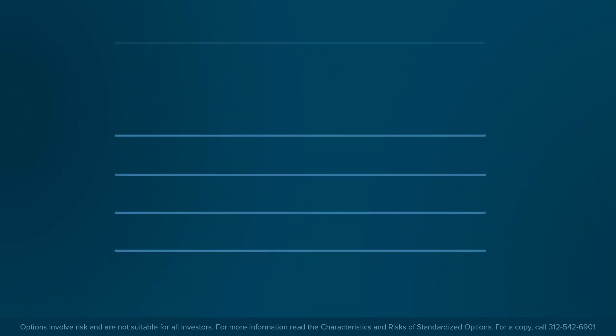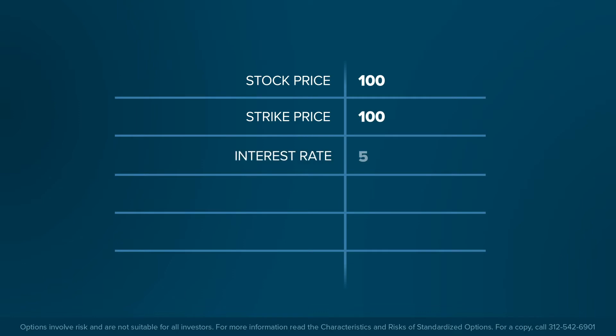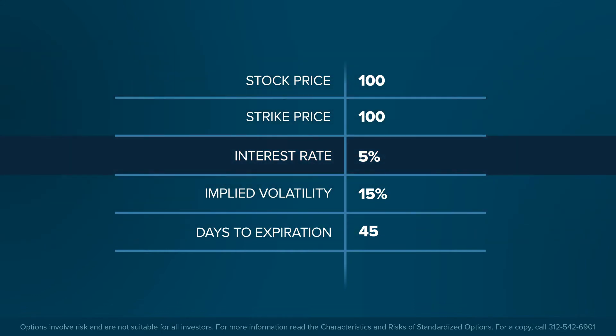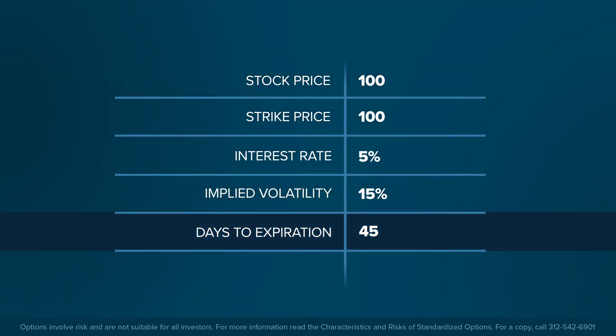Option premiums and the subsequent changes in option values can be predicted through a pricing model such as Black-Scholes. We will simplify things by taking you through the basic inputs of an option pricing model and let you see how each input impacts an option's value. Standard inputs of an option pricing model are strike price, interest rate, implied volatility, underlying asset price, and time to expiration.